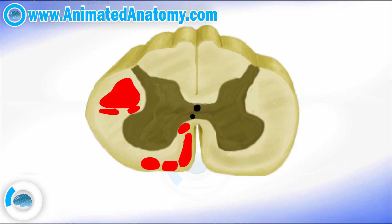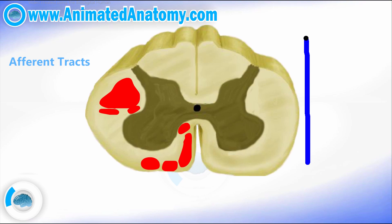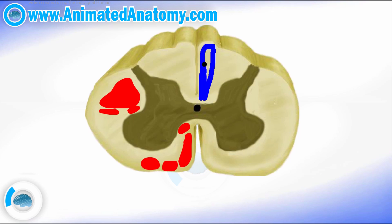I will explain later where they come from, what their function is, and everything else. Right now I'm just covering the names of the tracts. Now let's move to the sensory or ascending pathways — the pathways that bring information from the body to the brain. Here you have the gracile fasciculus, and right next to it, a little more laterally, you have the cuneate fasciculus.